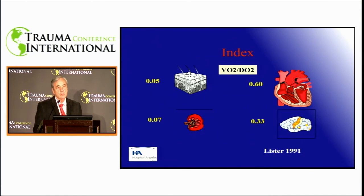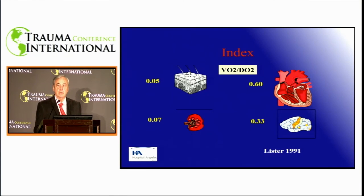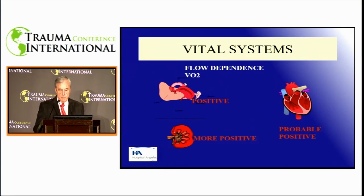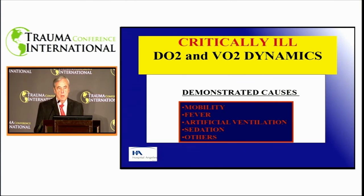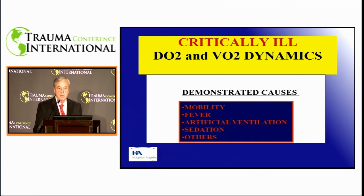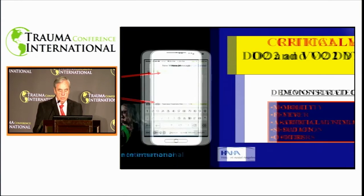Our body and each organ have different extraction constants—for example, the skin extracts almost nothing, the kidneys a little more, but the heart definitely extracts a lot and has a very high slope of extraction, as does the brain. There are organs very dependent on flow and others more dependent on pressure than flow. Many things are capable of altering the need to consume more oxygen: mobility, fever, artificial ventilation, sedation, and many other things that can influence a patient.